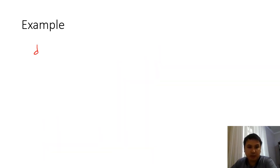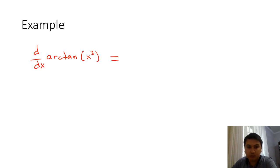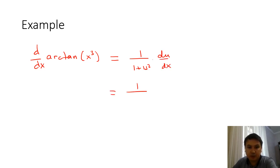One example: find the derivative of arctan(x³). Let u = x³. By the formula, this is 1 over (1 + u²) times du/dx, which gives 1 over (1 + x⁶) times 3x².